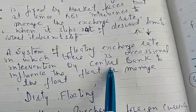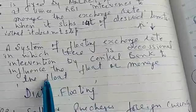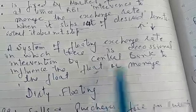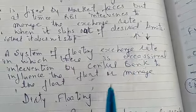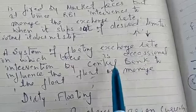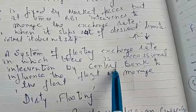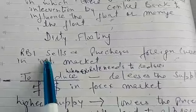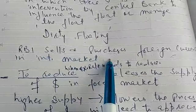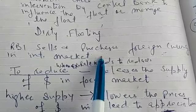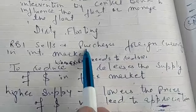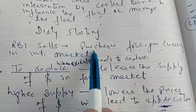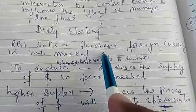The central bank intervenes to influence and manage the float — to manage high or low situations that may occur. Here, either the RBI sells or purchases foreign currency in the international market. RBI means the central bank of any country.